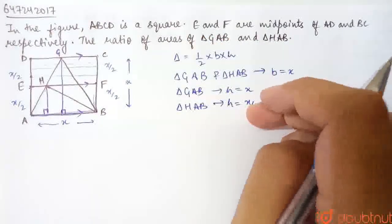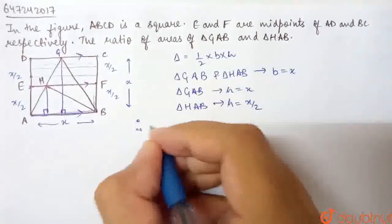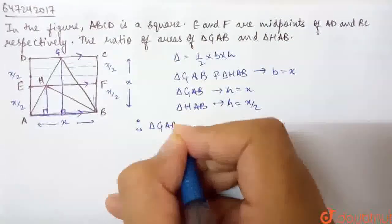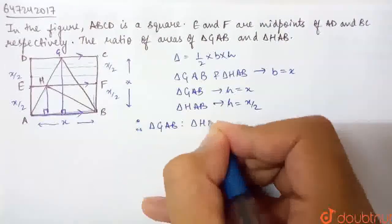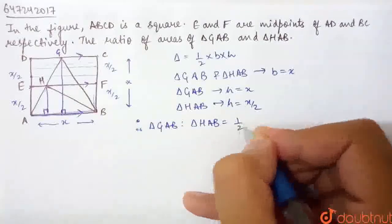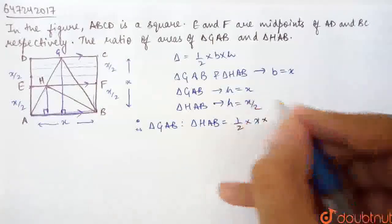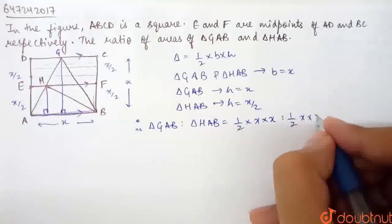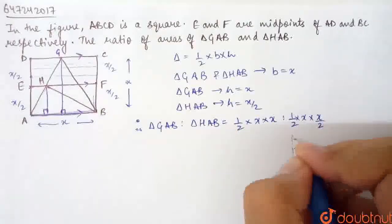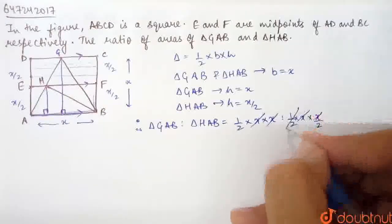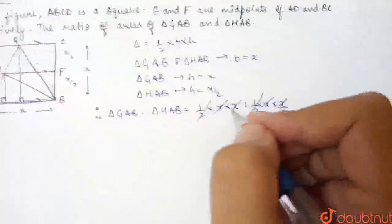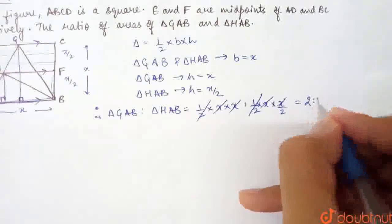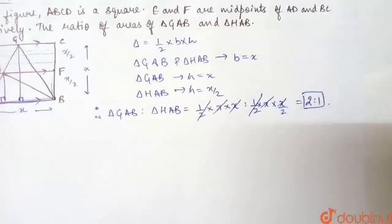So the area ratio: triangle GAB to triangle HAB equals (1/2 × base X × height X) to (1/2 × base X × height X/2). The X's cancel out, the halves cancel out, giving us 2 to 1. That is the required ratio of areas.